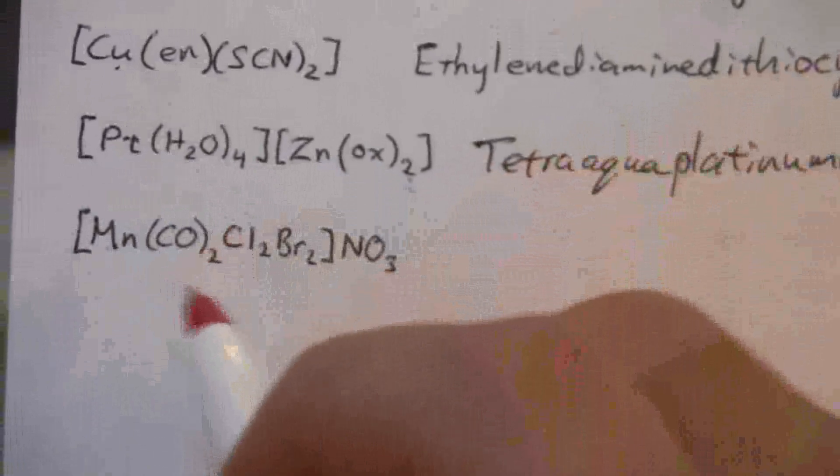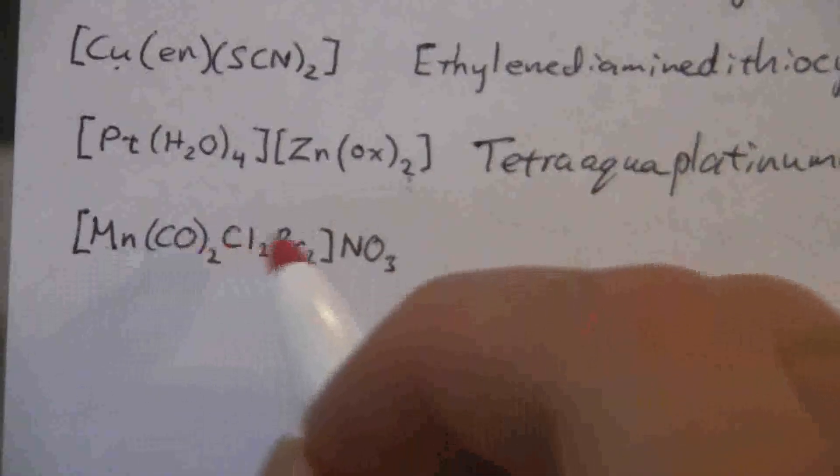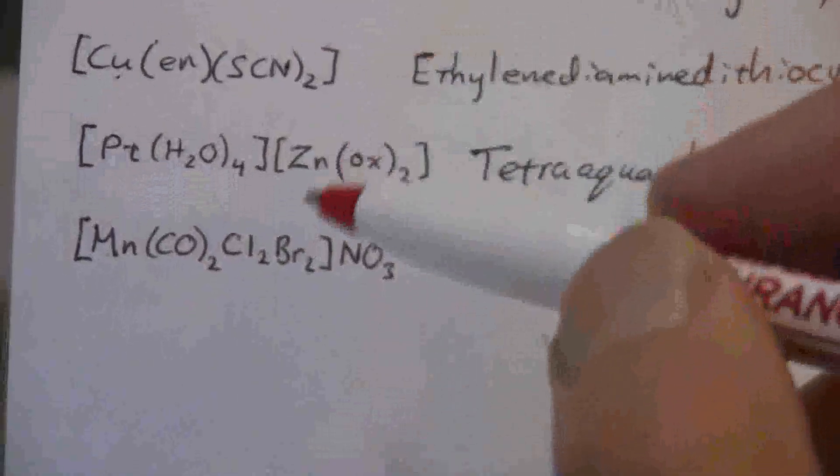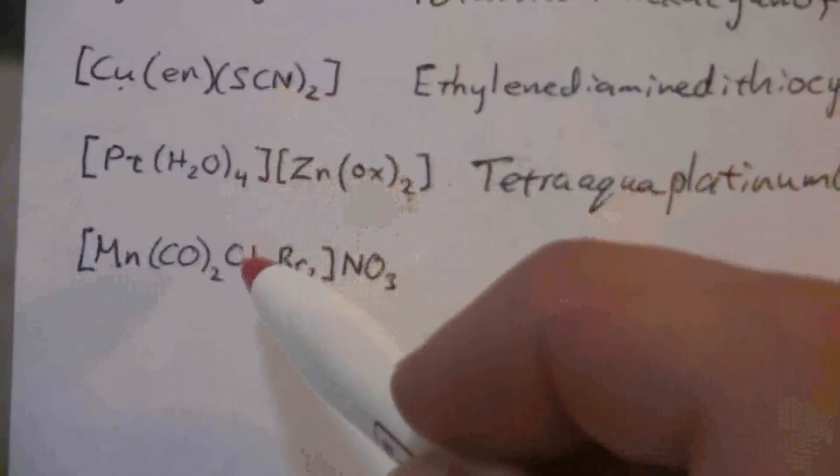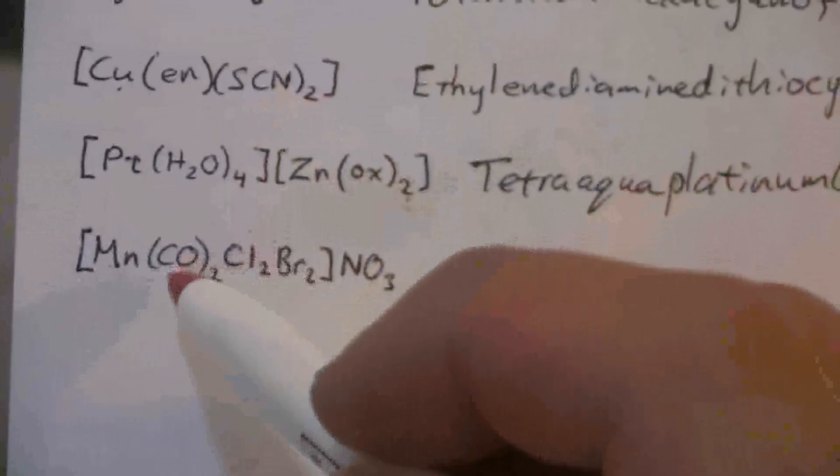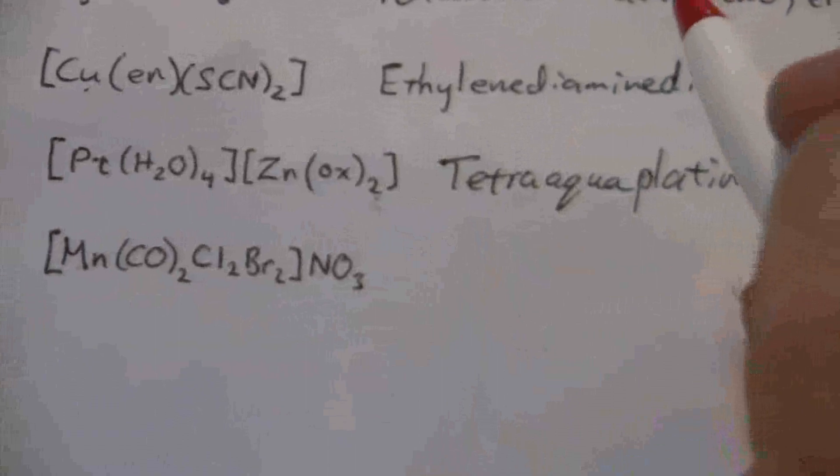So now we will name the ligands, and we do this in alphabetical order. So bromo, carbonyl, and chloro is the order that we're going to put those in.